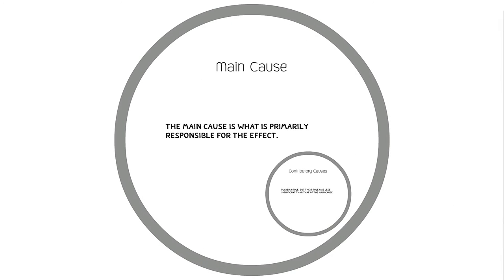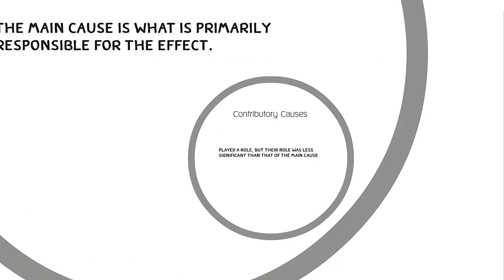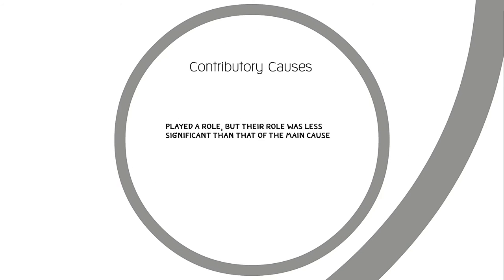Now it gets a bit more complicated. There are multiple types of causes. First, there is the main cause, or the cause that is primarily responsible for any given effect. You can see how this might be a matter of some debate. Outside of the main cause, we have contributory causes — actions or events that played a role in the effect, but a less important role than the main cause.